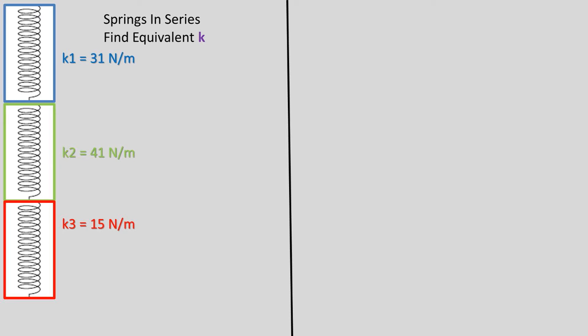So for the blue spring, there are 31 newtons of force per meter of compression or elongation. The formula for the k or spring constant equivalent for springs in series is 1 over k_eq equals 1 over k1 plus 1 over k2 plus 1 over k3.